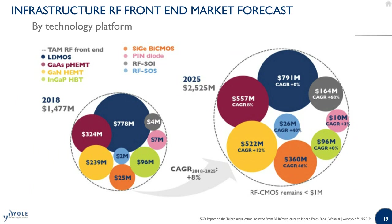From an estimated market of $1.48 billion in 2018, we expect growth to $2.5 billion in 2025, with the largest growth coming from materials beyond standard LDMOS. For example, silicon germanium should grow to $360 million with a 46% CAGR, and RF silicon-on-insulator should grow to $164 million with a 68% CAGR. LDMOS should stay flat, as it's mostly used for main power amplification and the number of antenna systems remains stable.